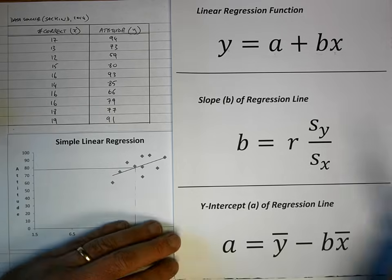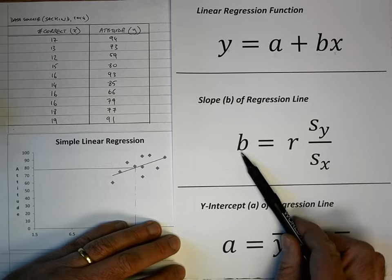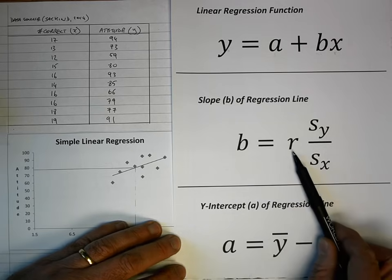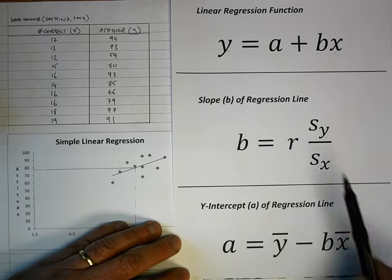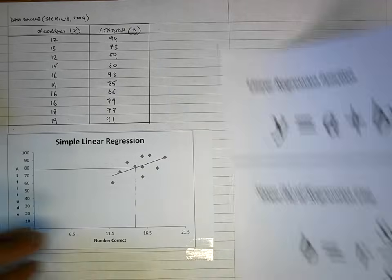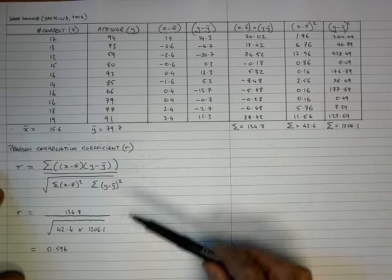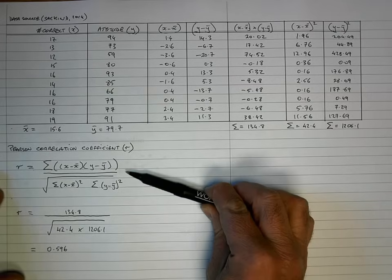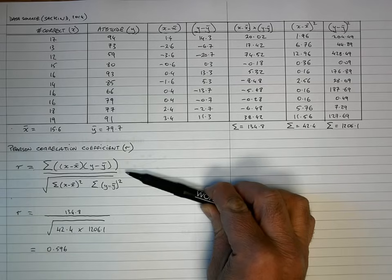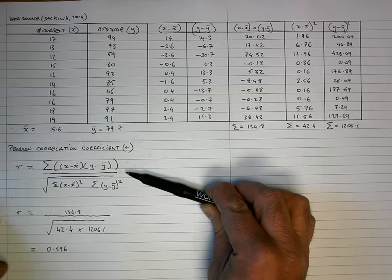So the order in which I'm going to do things is: first determine the slope of the line B using Pearson's correlation coefficient and the two standard deviations. In an earlier video I showed you how to calculate the correlation coefficient R using the formula. If you'd like to learn how to do this, click on the link appearing on your screen now to show you how to calculate Pearson's correlation coefficient R by hand.